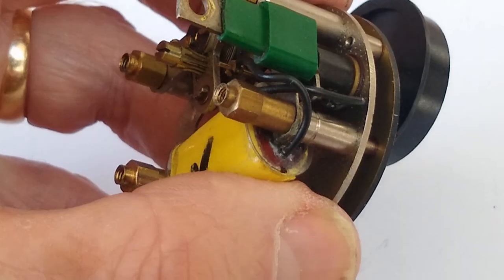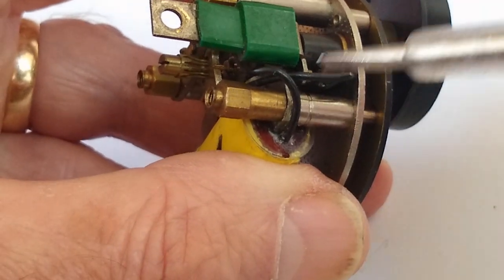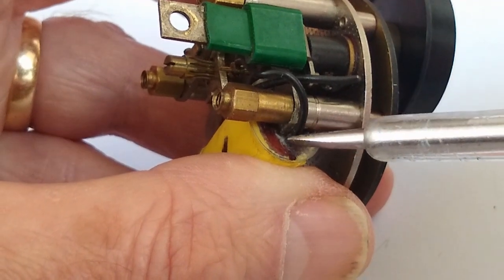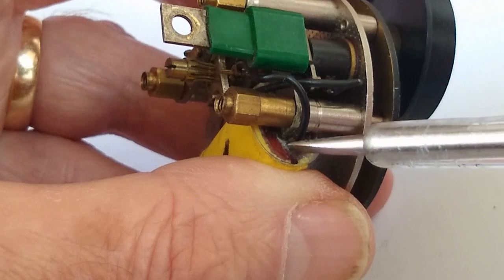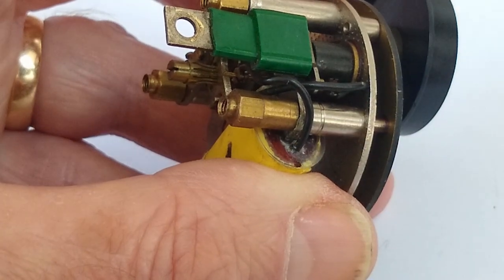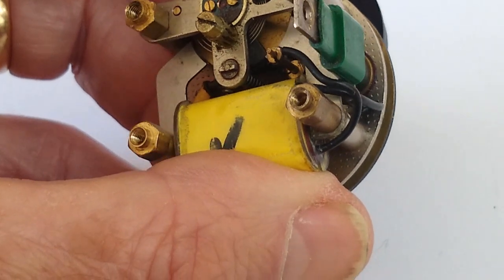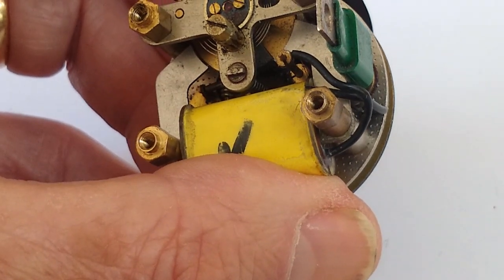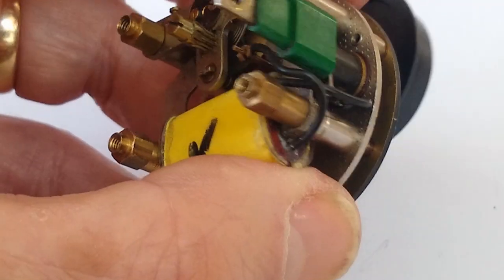Now before you do that, it's a very good idea to put some superglue just around where the wires, the two places where the wires go into the solenoid body here and let that superglue dry. Just put a drop of glue there, and that will ensure that you don't strain the internal windings of the solenoid when you remove it.